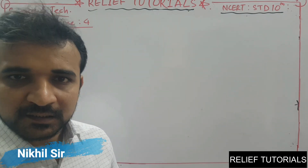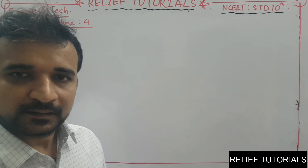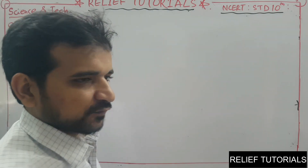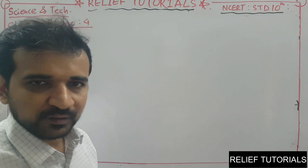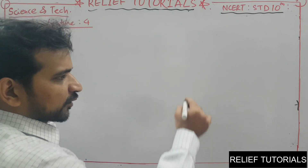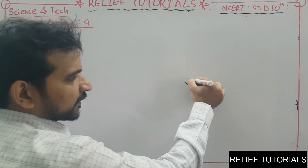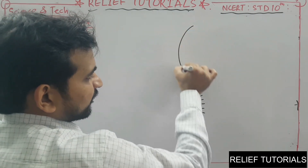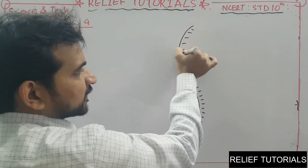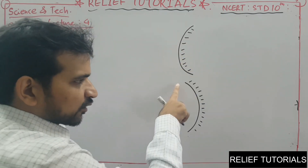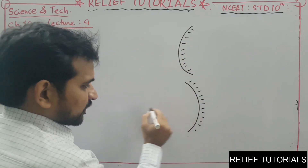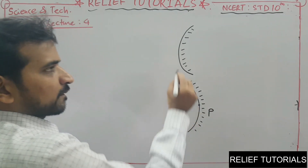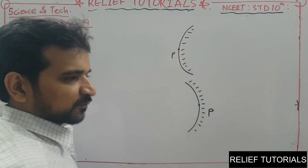Good morning and welcome back to the spherical mirrors class. In the last lecture we discussed two types of spherical mirrors: concave mirror, which has the inner surface reflecting, and convex mirror, which has the outer surface reflecting. In the concave mirror, the center of the reflecting surface is called the pole, and this is the pole for the convex mirror as well.